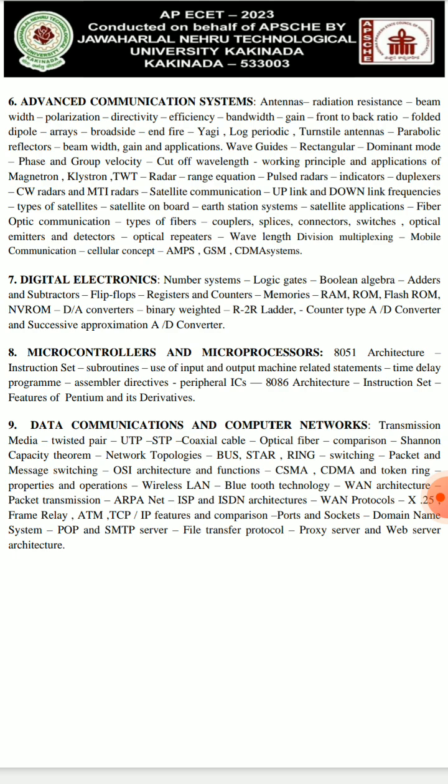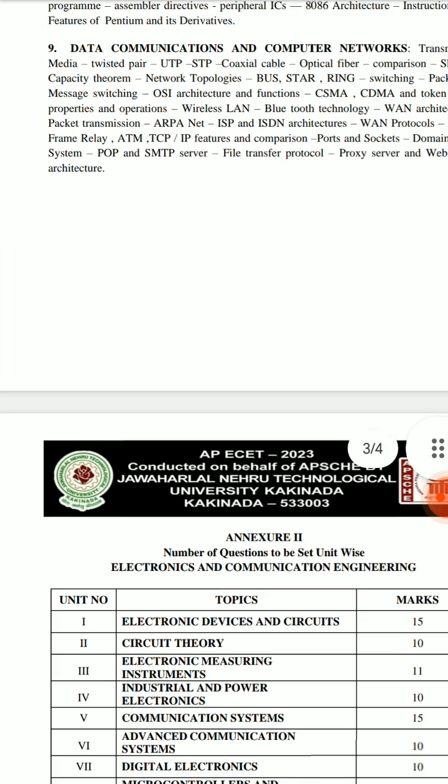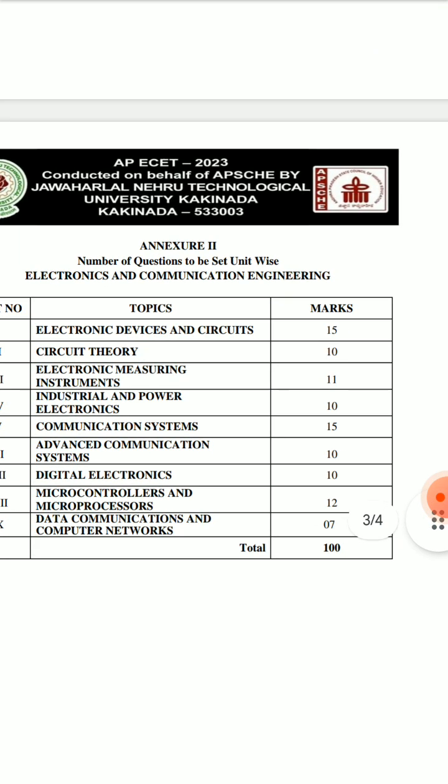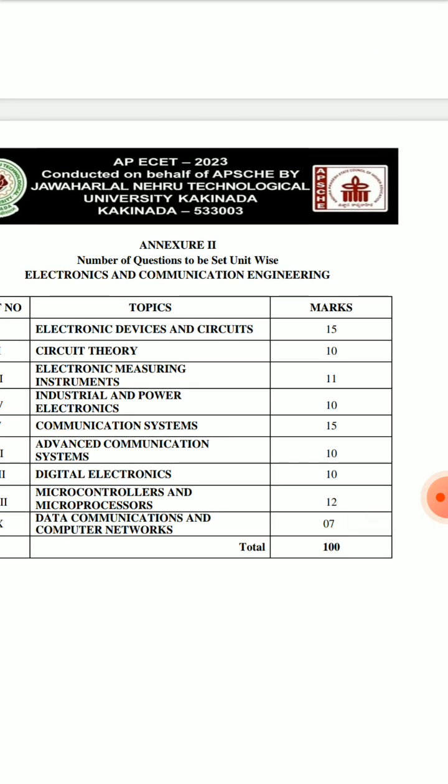Here is the mark distribution: EDC 15 marks, Network Analysis 10 marks, Electronic Measuring Instruments 11 marks, Industrial and Power Electronics 10 marks, Communication Systems 15 marks, Advanced Communication 10 marks, Digital Electronics 10 marks, MP and MC 10 marks, Data Communication and Computer Networks 7 marks. Total is 100 marks.